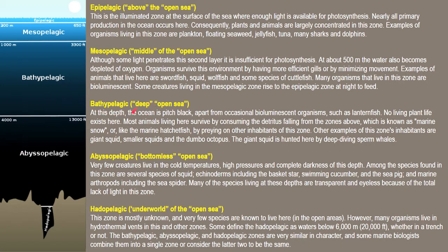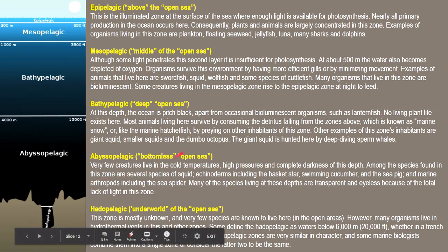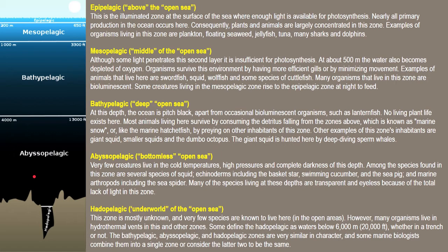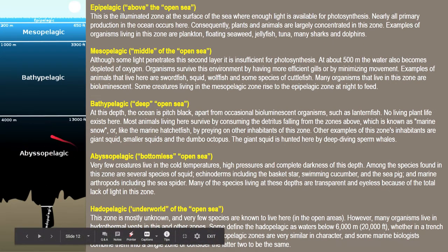Below the mesopelagic is a large region — the bathypelagic or deep ocean. The ocean here is pitch black. You have bioluminescent organisms such as lanternfish. No living plant life could exist here because light cannot penetrate the water, so photosynthesis is not possible. Other examples include giant squid, dumbo octopus, and sperm whales. Below the bathypelagic is the abyssopelagic region — 'bottomless open sea.' Very few creatures could survive the cold temperature, high pressure, and complete darkness here. Examples include basket star, sea cucumber, sea pig, and marine arthropods. They are mostly transparent and eyeless because there is no light.